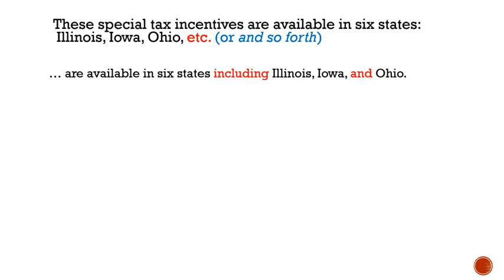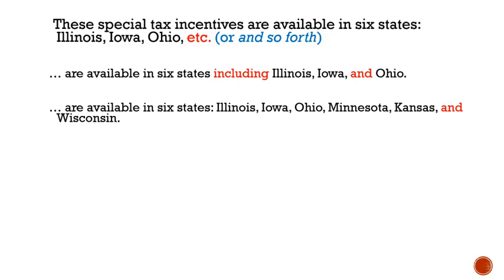Instead of adding 'etc.,' there's a much better strategy, particularly in academic writing. You could take out the colon and say 'are available in six states including Illinois, Iowa, and Ohio.' Here you've just given an example of three of the states in this list. Or you could keep the colon and write all six states.